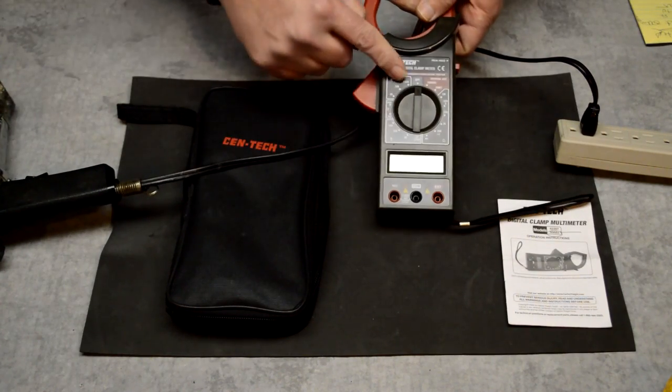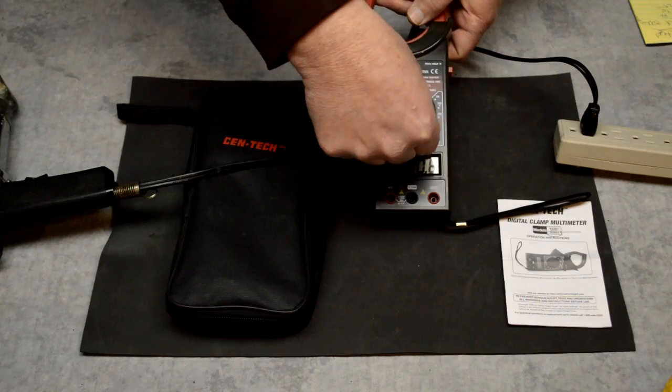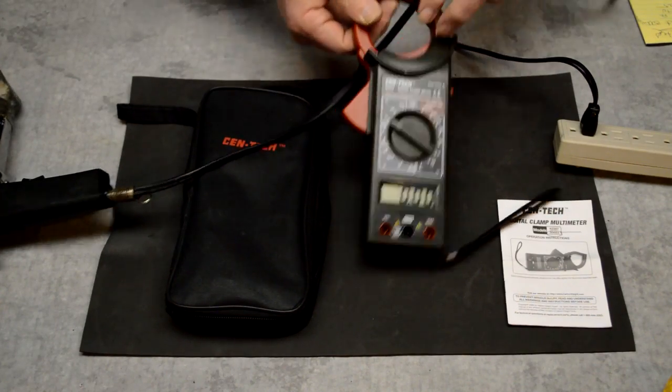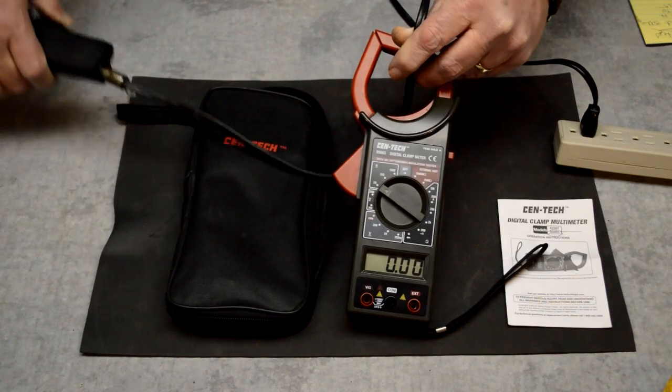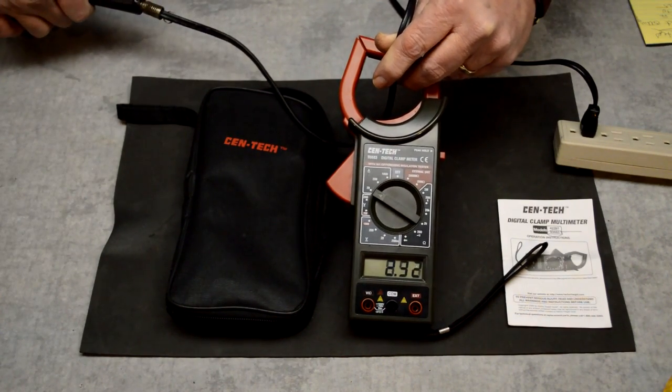Let's go ahead and set our meter for 20 amps here. And we're going to try to keep our wire right in the middle and go ahead and turn this on.